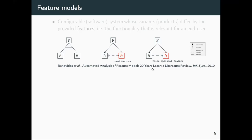There's extensive work on automated analysis of feature models to pinpoint dead features and other anomalies. Another example is a false optional feature: F2 appears optional, but if F1 is mandatory and requires F2, then F2 is present in every valid product — making it a false optional feature. Our tooling finds the equivalent of these anomalies in behavioral models, specifically in feature transition systems.